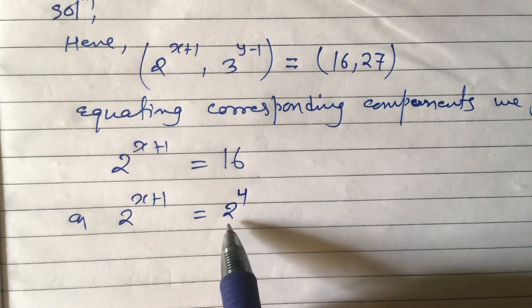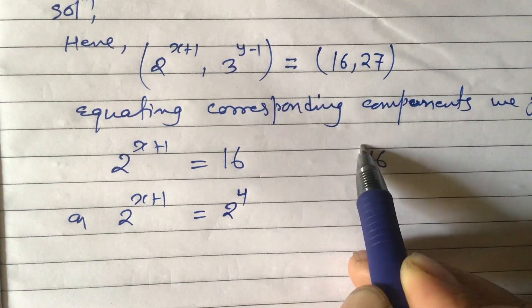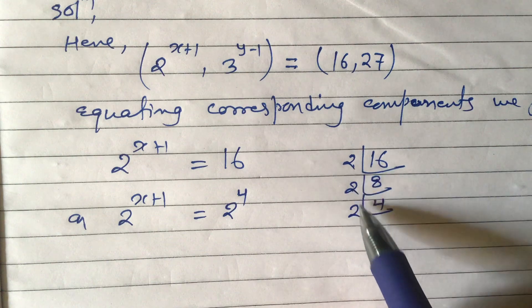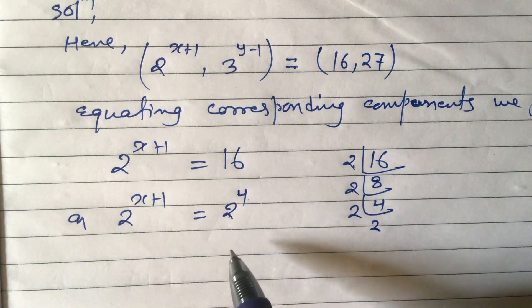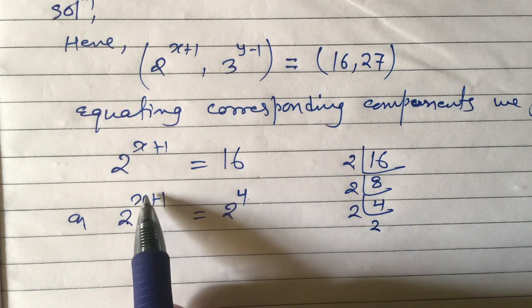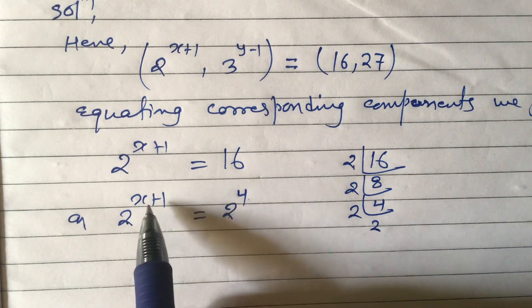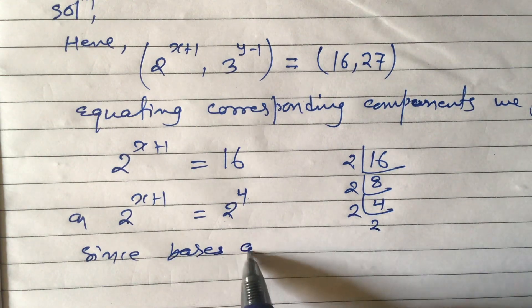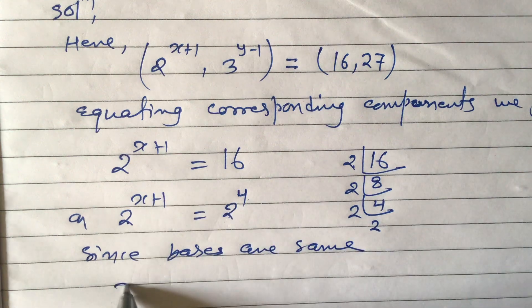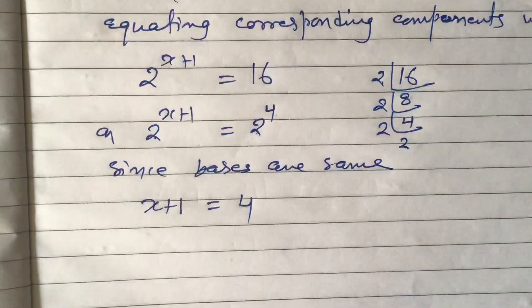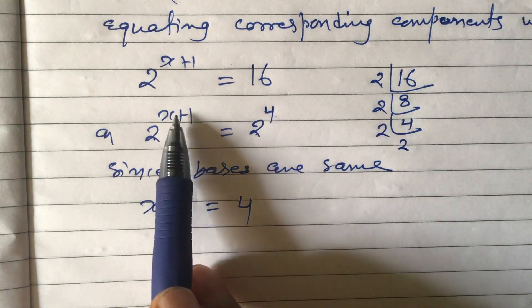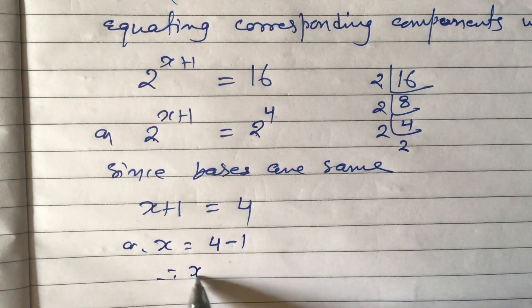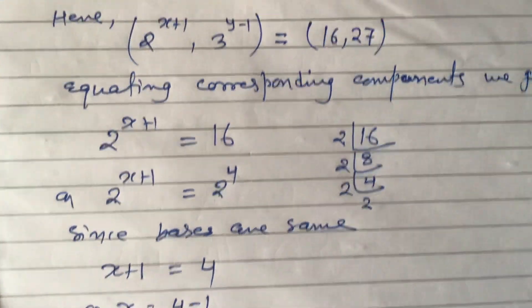To find that 16 equals 2^4: the prime factors of 16 are 2×2×2×2, which gives four 2s, so 2^4 equals 16. Since the bases are the same, we can equate the powers: x+1 equals 4, so x equals 4 minus 1. Therefore x equals 3.